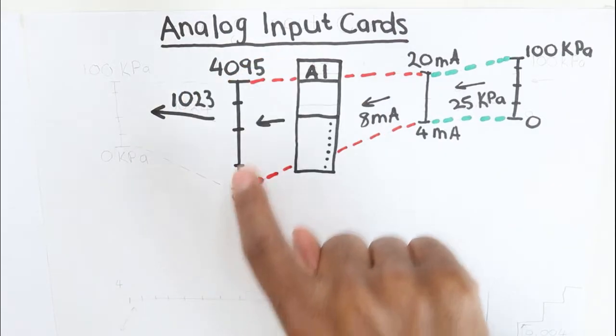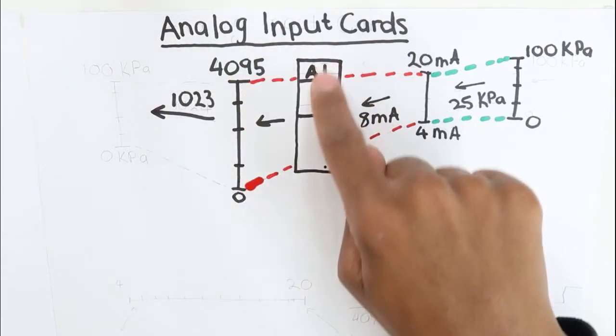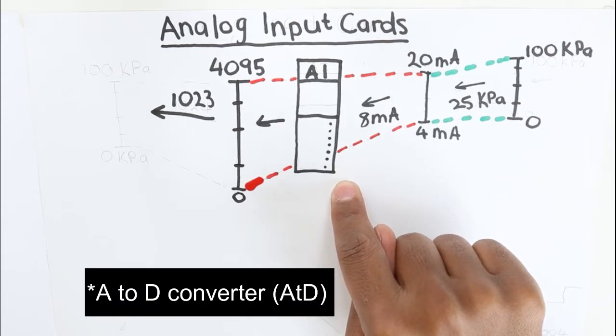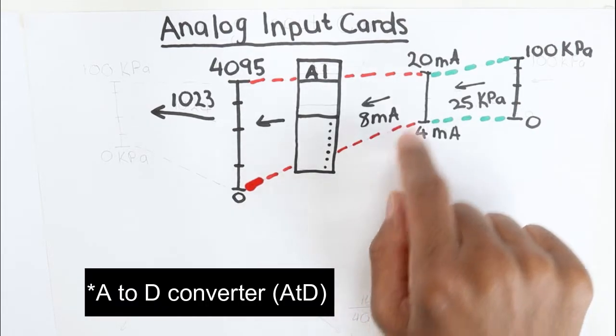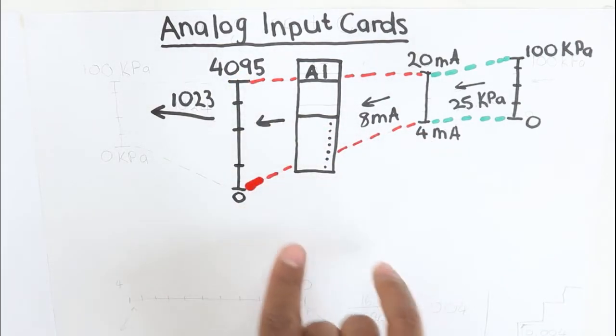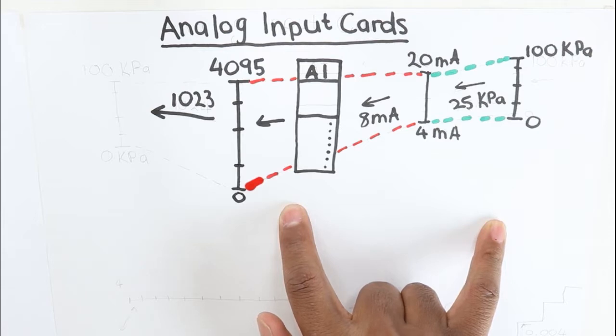Now where does the card get this range from? So the card has an ADC converter which stands for analog to digital converter. The 0 to 4095 is the actual bitmap of the current signal.